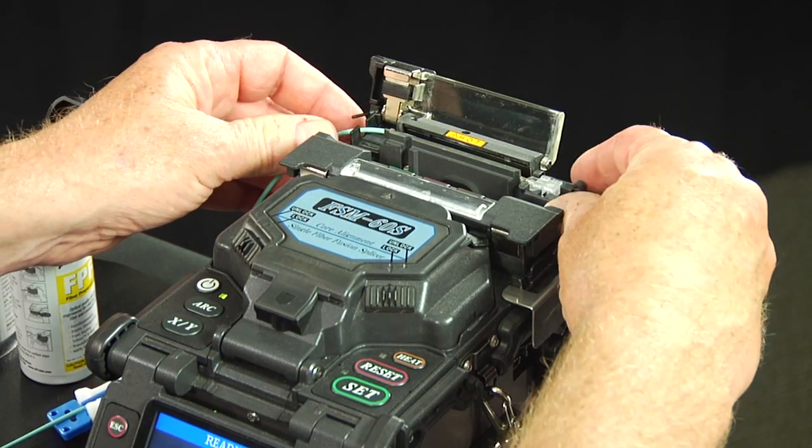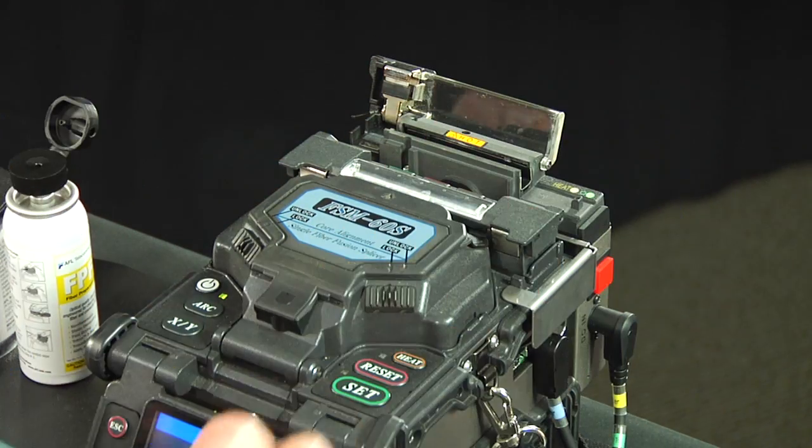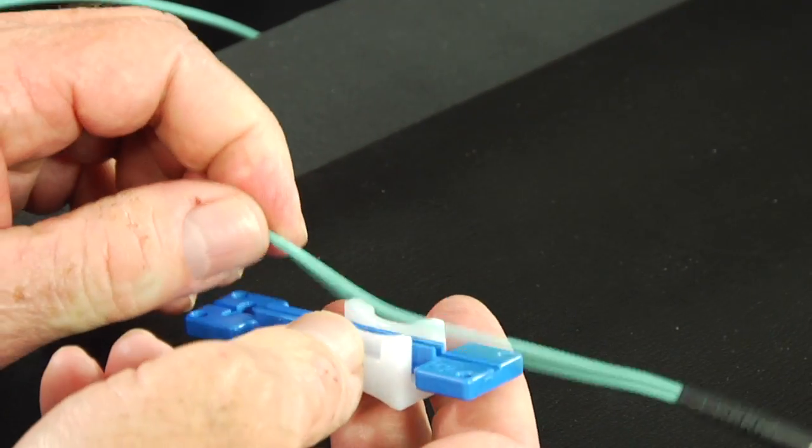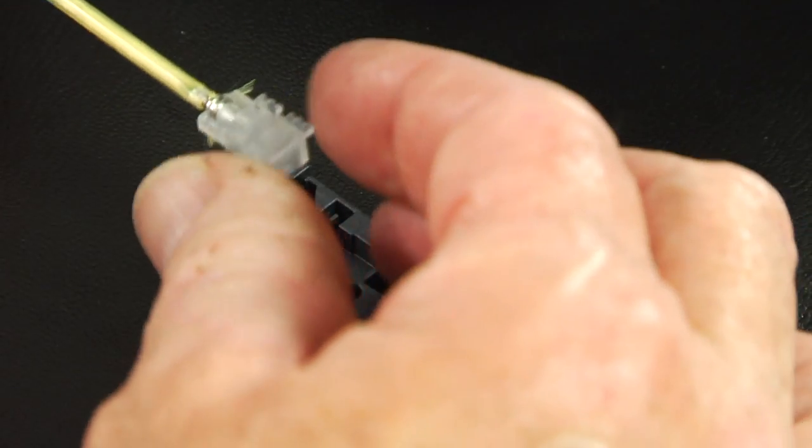Remove the fiber and connector assembly from the tube heater. Unclamp the 2 millimeter cable clamp. Remove the connector from connector body holder.